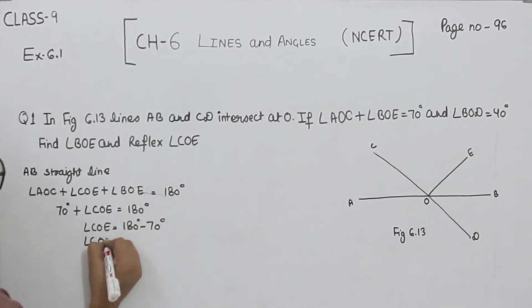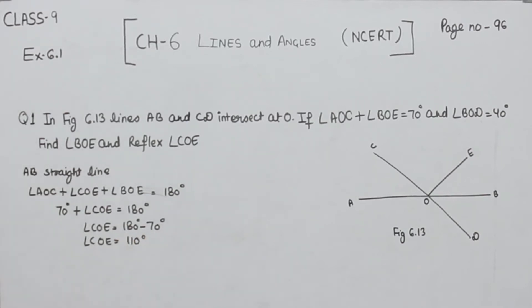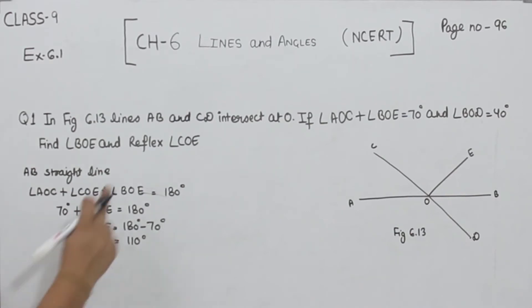Now, angle COE is equal to 180 minus 70, so angle COE is equal to 110°. We have found the value of angle COE.